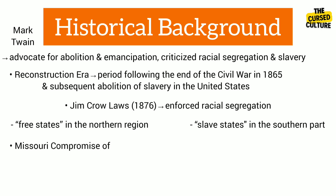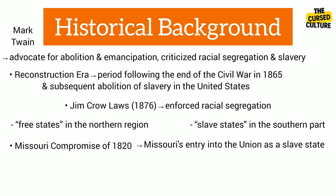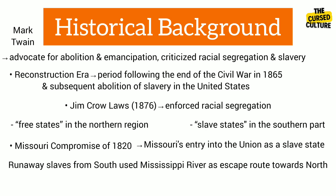The Missouri Compromise of 1820 was a negotiated agreement between anti-slavery representatives from the north and pro-slavery representatives from the south. It permitted Missouri's entry into the union as a slave state but prohibited slavery in all other territories north of Missouri's southern border. This allowed runaway slaves from the south to utilize the Mississippi River as an escape route towards the north, where they would attain freedom, which The Adventures of Huckleberry Finn depicts.